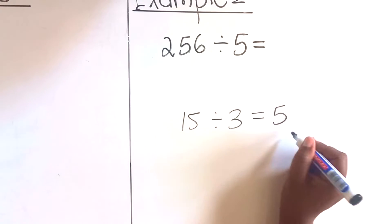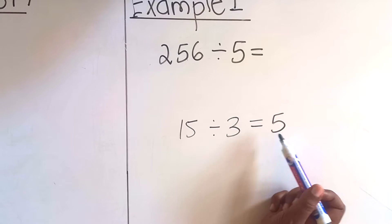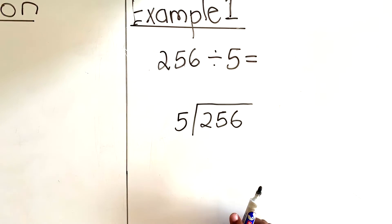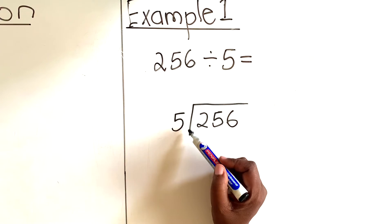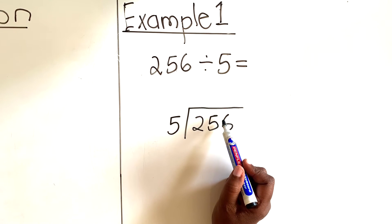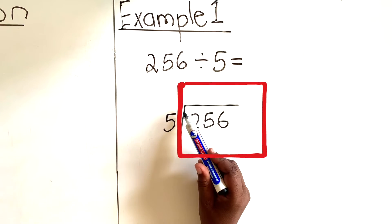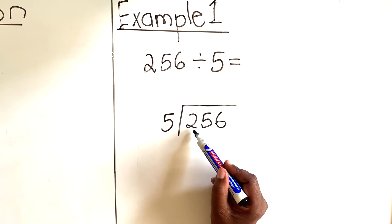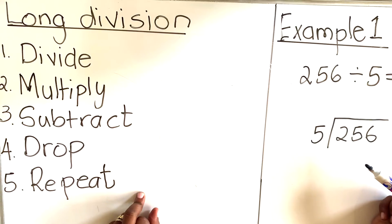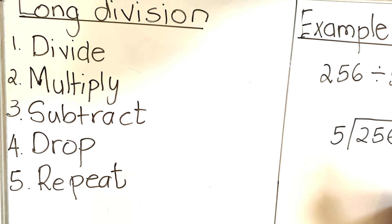When we have a bigger number it's not easy to count like that, so that's why we have long division. When writing long division, you write the divisor outside and the dividend — 256 — inside the division box. Then you follow these steps: first you divide, second you multiply, then you subtract, you drop, and then you repeat all these steps again.